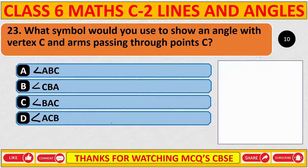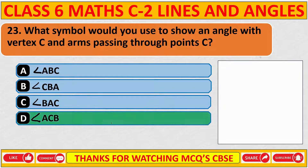What symbol would you use to show an angle with vertex C and arms passing through points A and B? The correct answer is D: angle ACB. Always, the vertex is written in the middle.